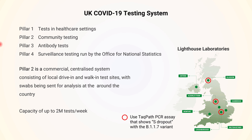Pillar 2 is a commercial centralised system consisting of local drive-in and walk-in test sites, and swabs are sent away for analysis to the Lighthouse Labs found around the country — in Glasgow, Alderley Park, and Milton Keynes, plus universities like Birmingham and London. I want to point out these three in particular because they use a particular PCR assay called the TaqPath assay in their testing programmes, and this shows something called S dropout, or Spike Gene Target Failure (SGTF), which I'm going to explain in a minute.